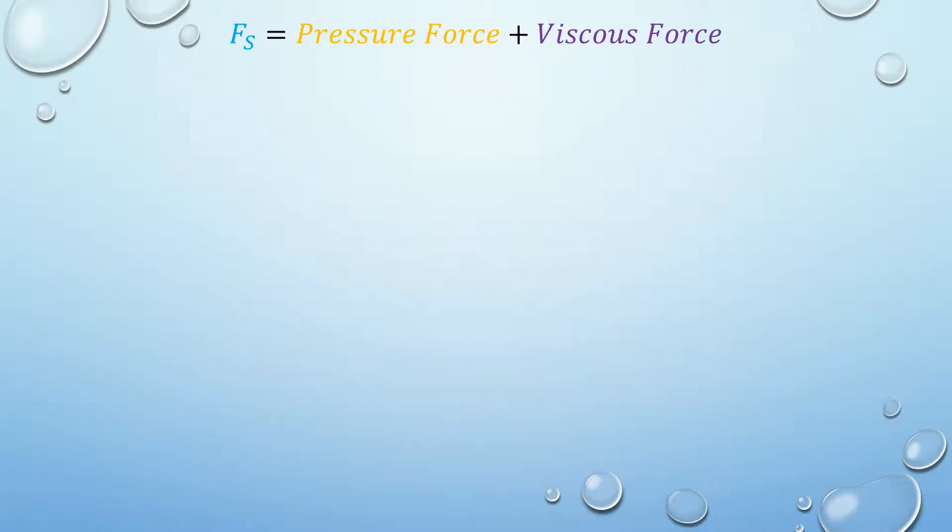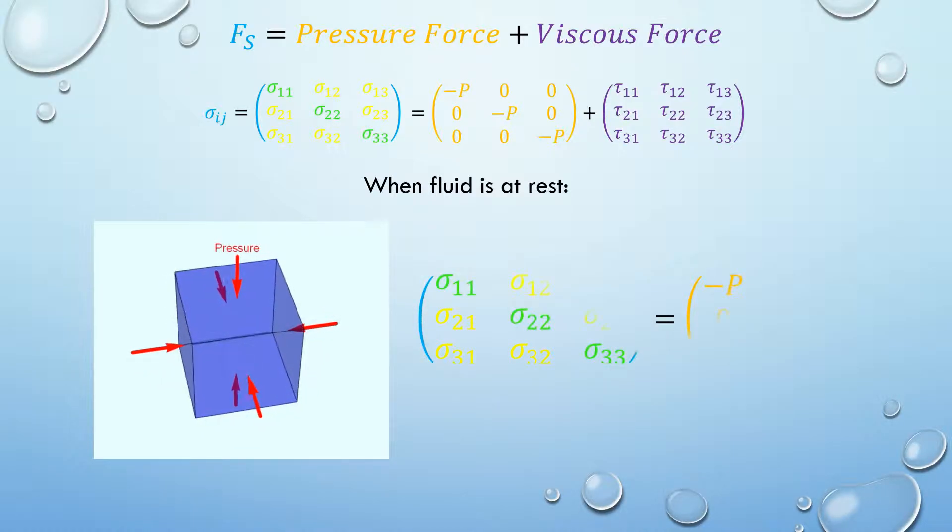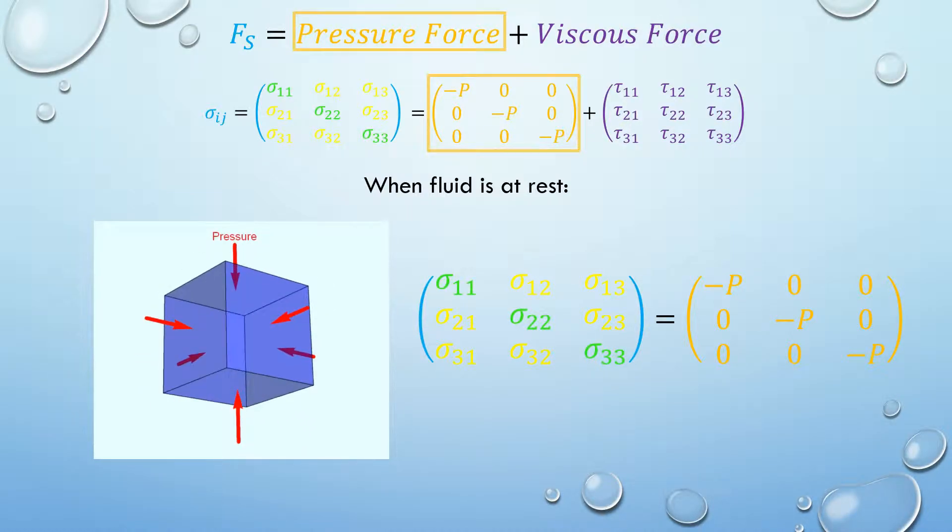Surface forces are pressure force and viscous forces and they can be represented by the fluid stress on the surface of the material volume. The fluid stress is the sum of pressure and shear stresses. Let's break it down. Assume the fluid is at rest, there is pressure from outside of the material volume which always acts normal to each face. Multiply pressure by the area of each face and you have pressure force.